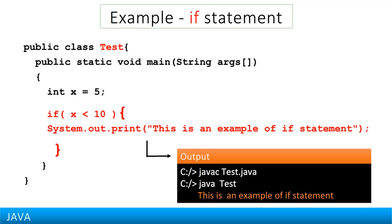Here is an example of the IF statement in action. We have a class Test, in which we declare a variable x and assign it a value of 5. Then we check through the IF statement if the value of x is less than 10, then we print the line, this is an example of IF statement.